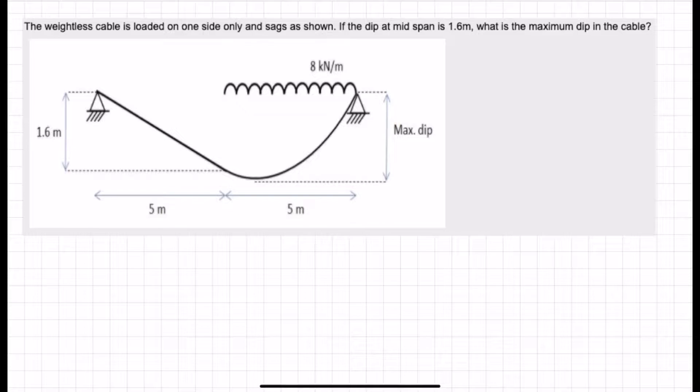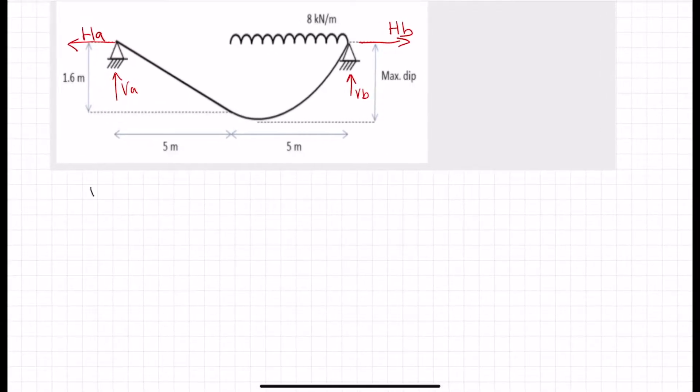So first things we need to do is try to find the reactions as always. We have a vertical reaction there, another one here. This is a cable and if you think about how cable structures are, if you try to load it, the supports will try to come together. So we are expecting a horizontal reaction going outwards like this. Let's put our equilibrium equations then. VA plus VB is equal to 8 times 5, which is the 8 kilonewtons per meter multiplied by the total load. So that will be 40.